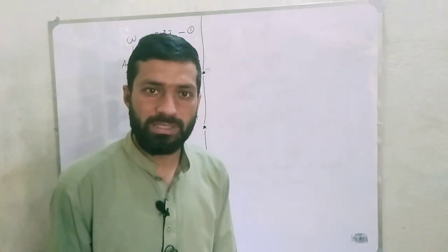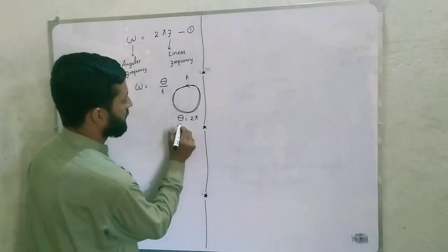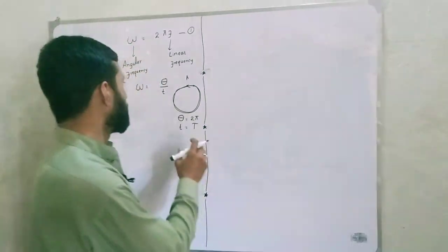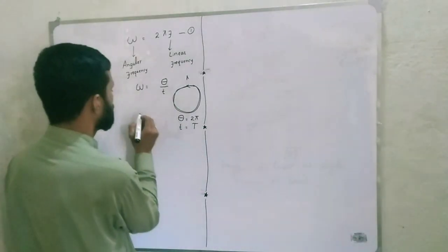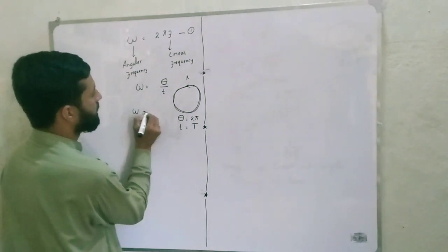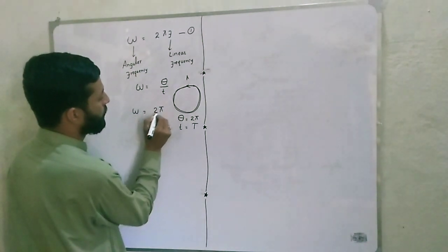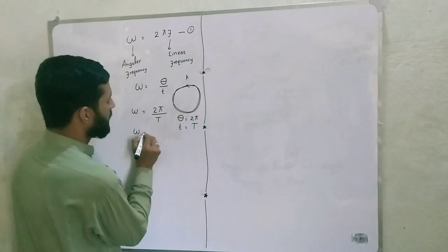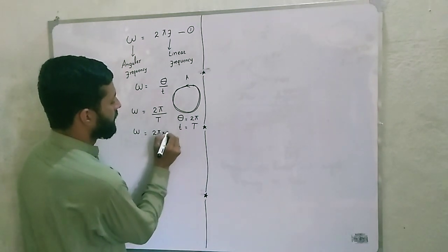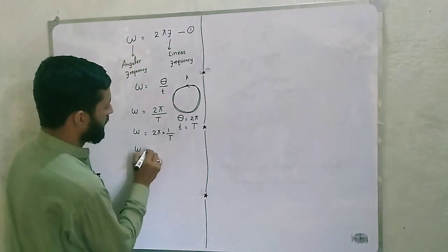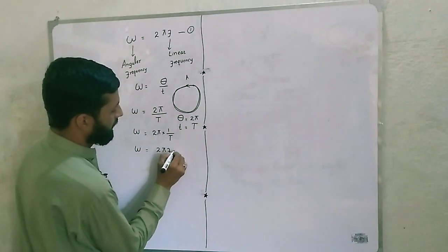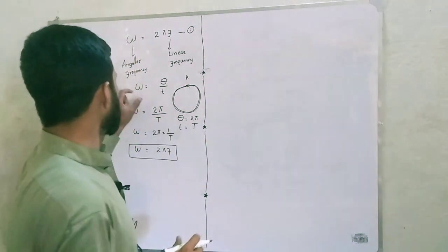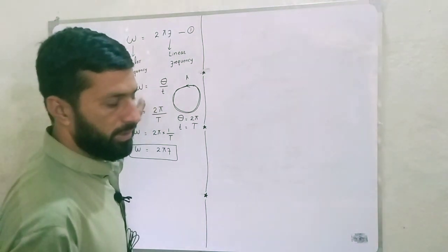For one revolution, theta is equal to 2 pi. This occurs in a specific time called the time period, so t equals capital T. Plugging into the equation, omega equals 2 pi divided by capital T. Since 1 over T equals frequency f, this becomes omega equals 2 pi f. This is proved from the equation of angular motion.